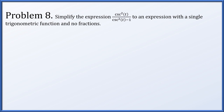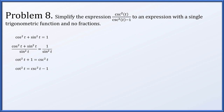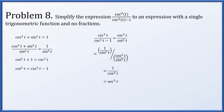Next, we simplify csc²t / (csc²t − 1) to a single trig function with no fractions. Recall the Pythagorean identity: cos²t + sin²t = 1. Dividing both sides by sin²t gives cot²t + 1 = csc²t, so cot²t = csc²t − 1. That's exactly our denominator. Replacing it, we have csc²t / cot²t. Writing csc² as 1/sin² and cot² as cos²/sin², the shared sin² cancels, leaving 1/cos²t = sec²t.